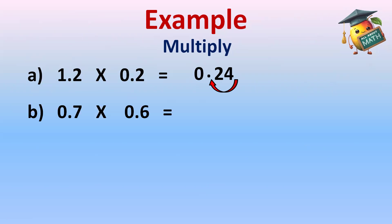Part B: 0.7 multiply 0.6. After decimal, one digit, and one digit. So total number of decimal places are 2. 7 sixes are 42. Decimal will come after two digits. So 0.42 is the answer.